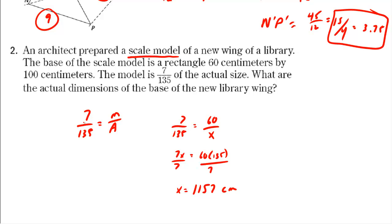We do the same thing now for the other dimension, so I have 7 over 135 is equal to, in this case I have 100 over x. Once again, I'm going to cross multiply. 7x equals 135 times 100, and then if I divide by 7 on both sides I can find the value that I'm looking for.